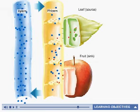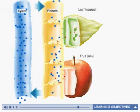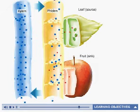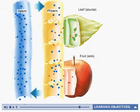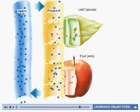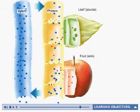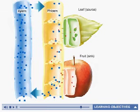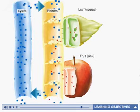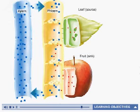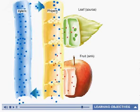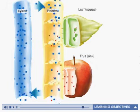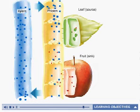In the area of the sink, sucrose is unloaded from the phloem by active transport. When the concentration of sucrose in the phloem near the sink is lowered, water moves out of the phloem by osmosis and back into the xylem. The difference in turgor pressure between the source and the sink causes the flow of the solution in the phloem.